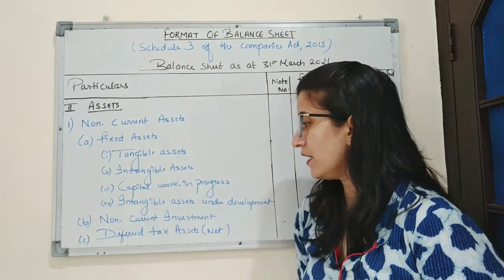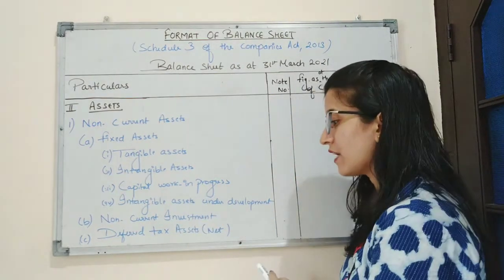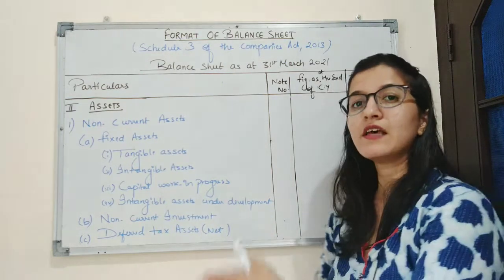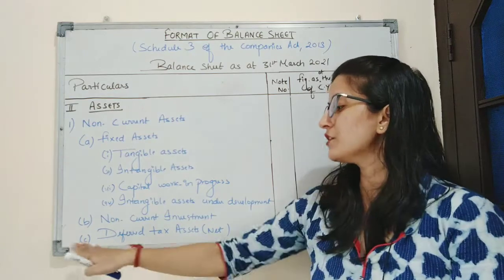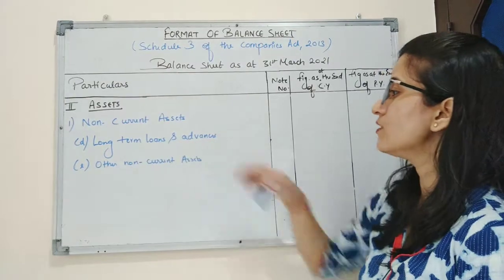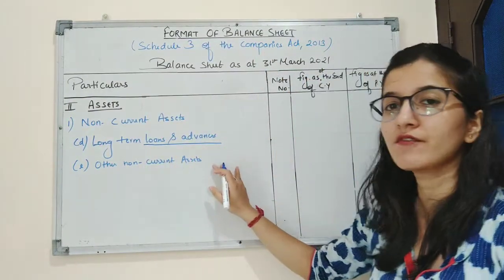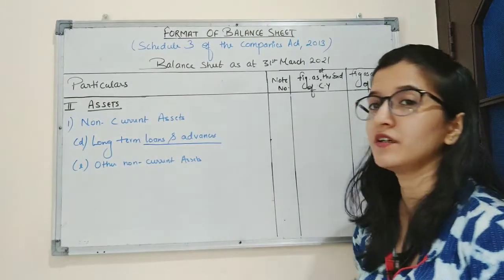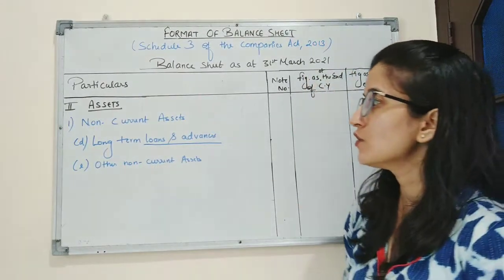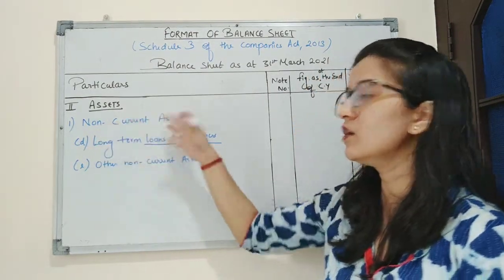Third part is deferred tax asset. Deferred tax asset means when the accounting income of a company is less than the taxable income. Fourth part is long-term loans and advances — the company has given loans to outsiders. And the last one is other non-current assets. These are the five sub-parts under non-current assets.